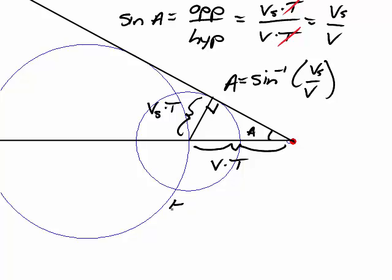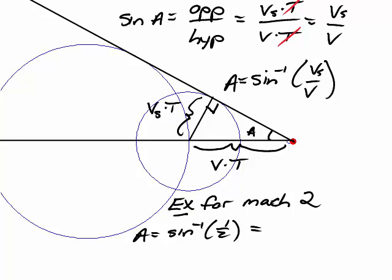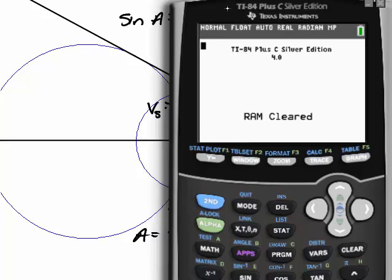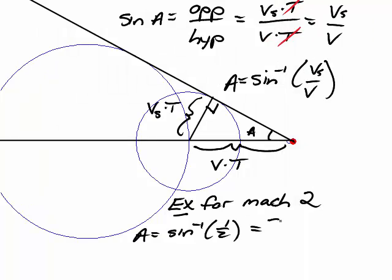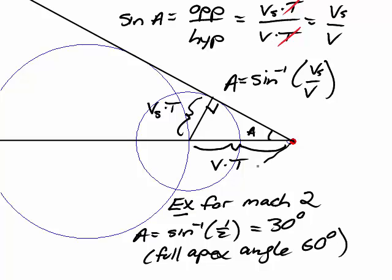So just as a quick example, for Mach 2, which is what was depicted here in this diagram, a is the arc sine. vs over v is one half. V is twice the speed of sound, and so vs over v is one half. Plugging that into a calculator, arc sine of one over two gives us 30 degrees, which is one of the standard angles you learn when you take trig. The sine of 30 degrees is one half. So 30 degrees is the value of a for Mach 2, or the full apex angle, that is the angle between the left side of the shock and the right side of the shock. This angle right here is 60 degrees.